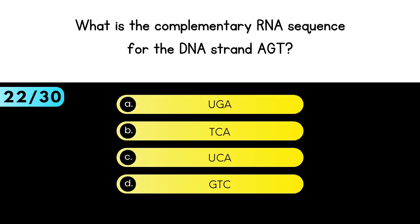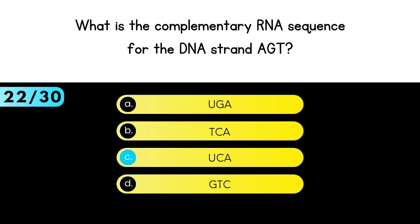What is the complementary RNA sequence for the DNA strand A, G, T? U, C, A is the answer.